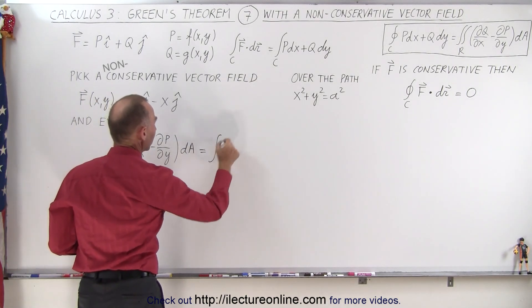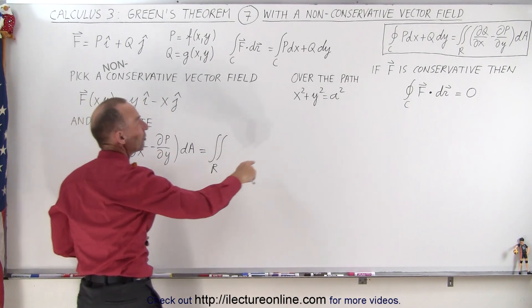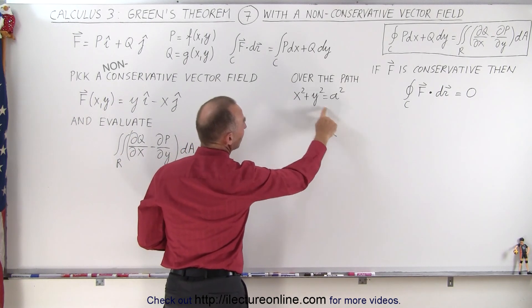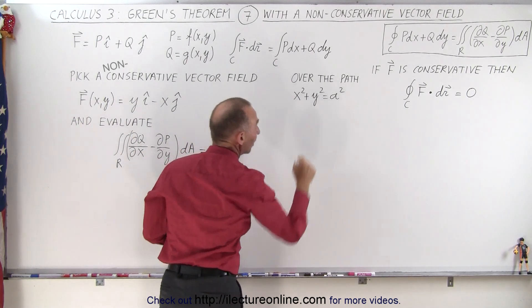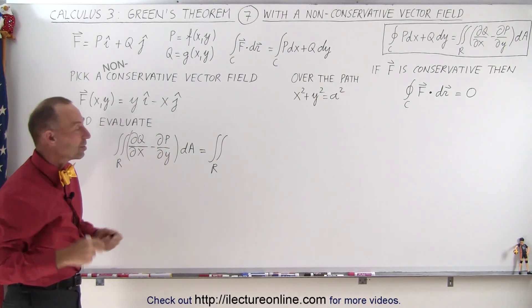This is going to be equal to the double integral over the region R enclosed by the path of integration. In this case, the path of integration is defined right here as x squared plus y squared equals a squared. That's simply a circle centered about the origin of radius a.